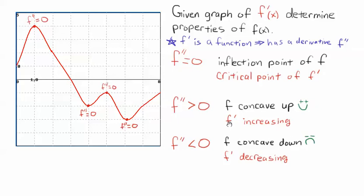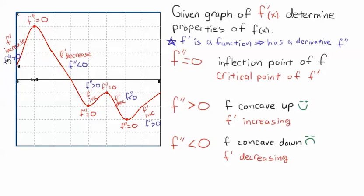If f'' is greater than 0, f' is increasing. If f'' is less than 0, f' is decreasing. So f'' is equal to 0 at these relative maxes and mins. We can tell that f' is increasing or decreasing on each interval once we break it at these critical points. So f' is decreasing on this interval, then increasing, then decreasing, then increasing. That means f'' is greater than 0, then less than 0, then greater than 0, then less than 0, then greater than 0 on these intervals.